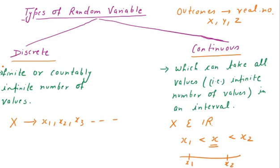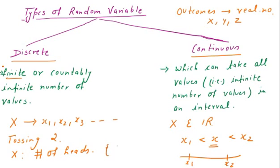In the case of a discrete random variable, we have a finite number of values or countably infinite. For example, if we are performing an experiment of tossing two coins and X denotes the number of heads, then X can take values zero, one, and two — a finite number of values. This is a case of a discrete random variable.